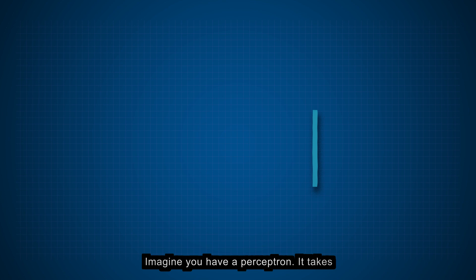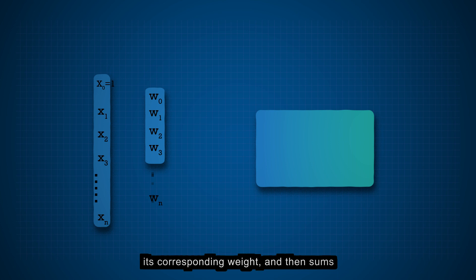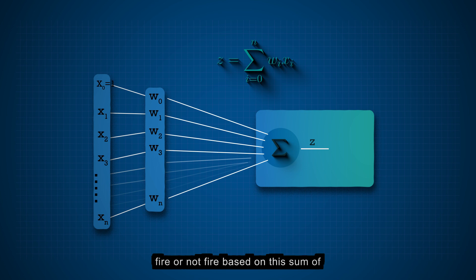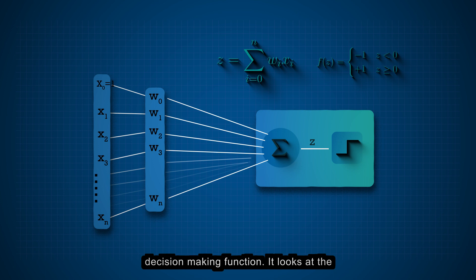Imagine you have a perceptron, it takes multiple inputs, multiplies each input by its corresponding weight, and then sums up all these weighted inputs. Now, the perceptron needs to decide whether to fire or not fire based on this sum of weighted inputs. This is where the signum function, also known as the step function, comes into play. The signum function is a simple but powerful decision-making function. It looks at the sum of weighted inputs and does one of two things.